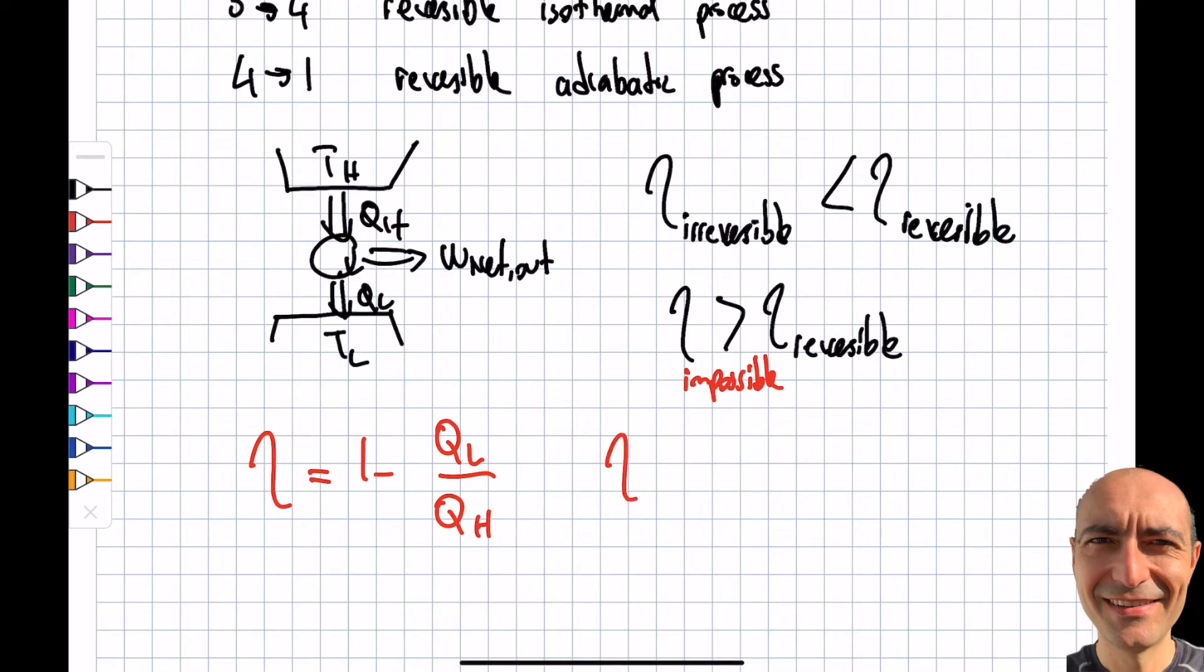For a reversible engine, Carnot showed that this efficiency reversible will be 1 minus TL by TH. I simply replace the QL by TL's, and that matches the second principle of Carnot because now this efficiency is purely depending on the TH and TL value.